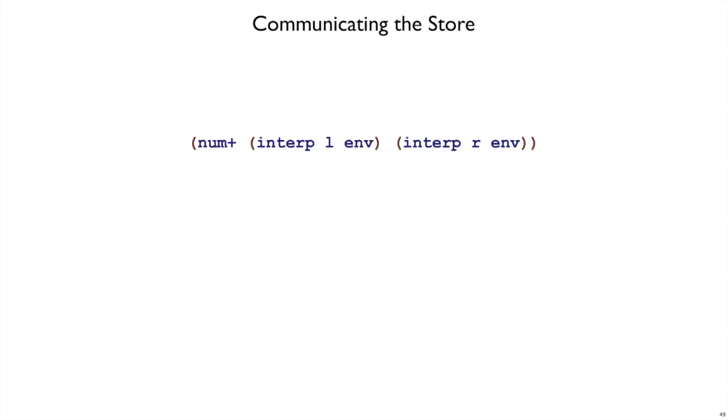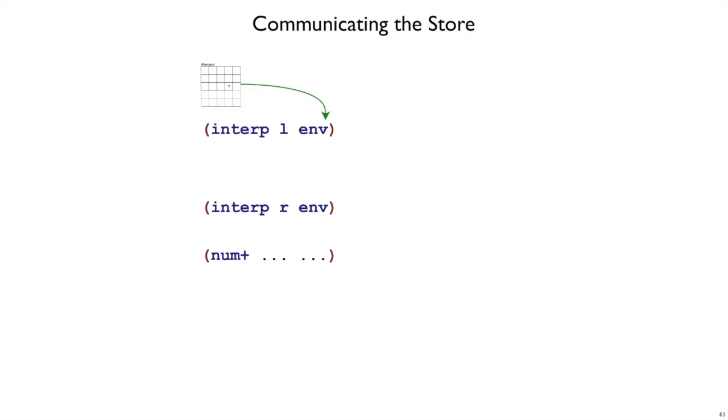We will need to rearrange pieces of our interpreter where it calls interp itself. So it used to be that when we implemented a plus expression with the left and right expression, we would just call interp, we would get numbers back, and we add them up. We're going to have to rearrange these pieces now because every call to interp needs to get, as an argument, the current picture of memory, the current store.